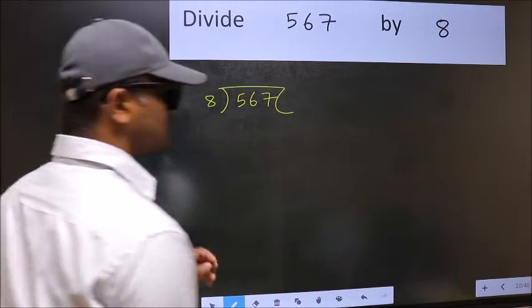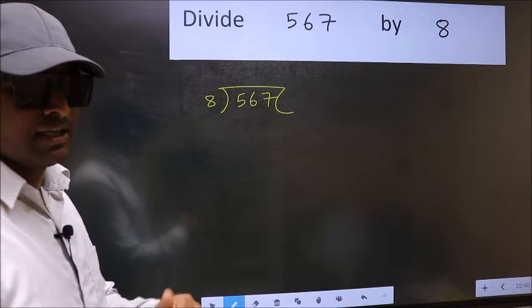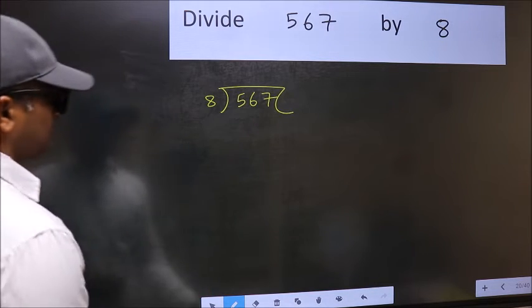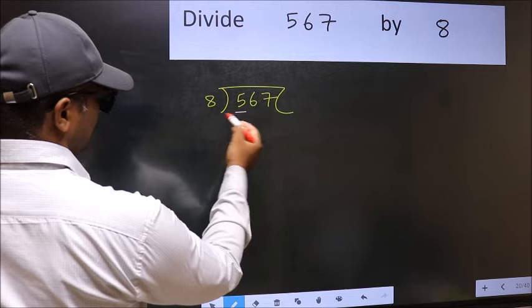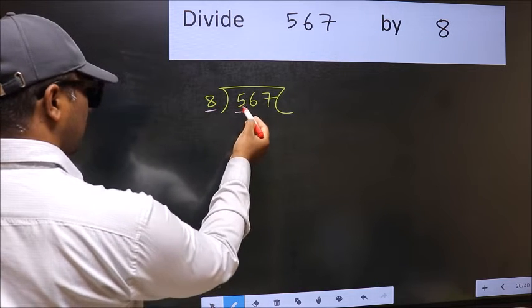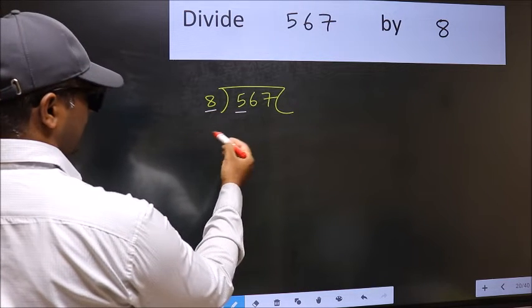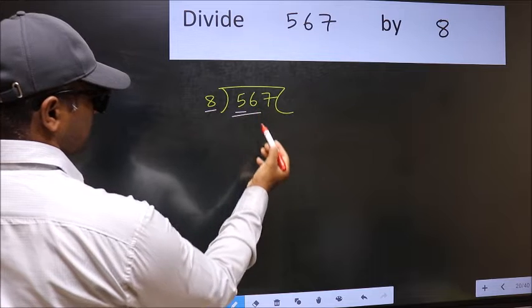This is your step 1. Next, here we have 5 and here 8. 5 is smaller than 8, so we should take two numbers: 56.